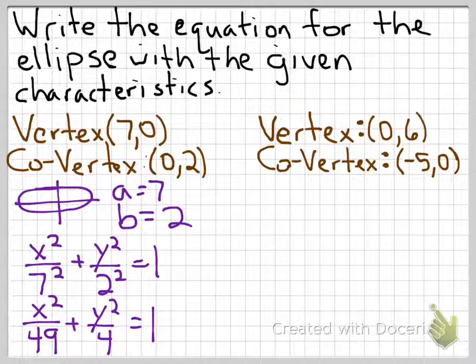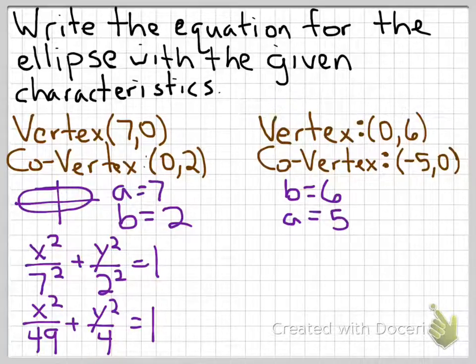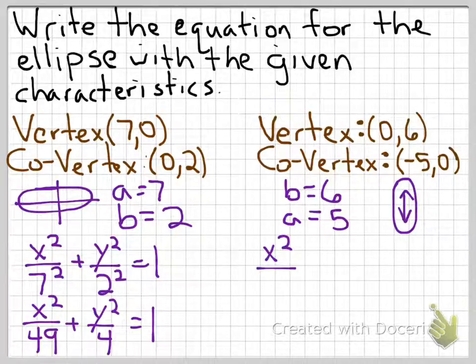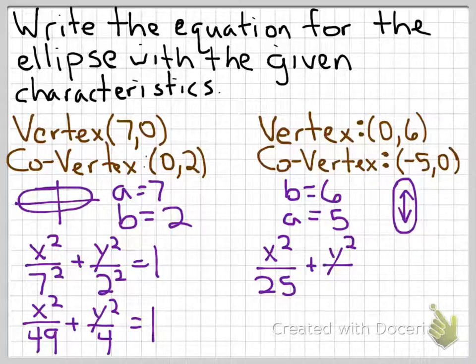Next, the vertex is (0, 6) and the co-vertex is (−5, 0). The y value of 6 associates with b, and the x value of 5 associates with a, so b is 6 and a is 5. Since b is slightly greater, it stretches in the vertical direction. The equation is x squared over 25 plus y squared over 36 equals 1. Be careful identifying which direction is stretching — you need to determine which point is further from the origin to know which is the vertex versus the co-vertex.